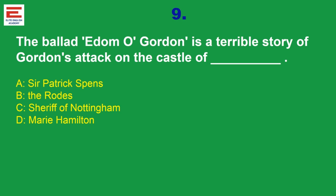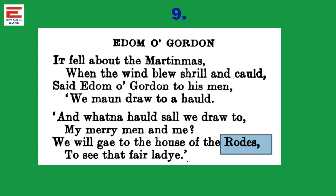Question 9: The Ballad 'Adam of Gordon' is a terrible story of Gordon's attack on a castle. The answer is the Roades. The poem begins: 'It fell about Martinmas... and we will go to the house of the Roades to see that fair lady.' Based on this, we have finalized the answer. The nature of ballad questions is not difficult — if you go through the text of these ballads, whatever may be the question asked, you can easily answer.